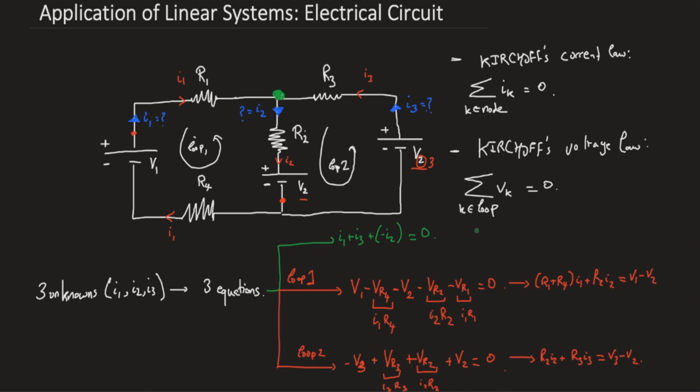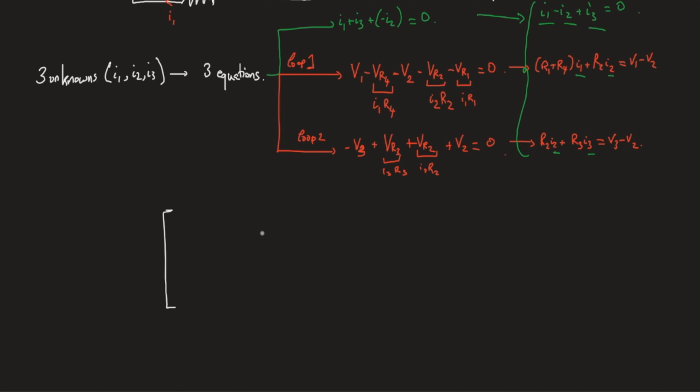Rewriting this, we get (R1 plus R4) multiplied by I1 plus R2 I2 is equal to V1 minus V2. Over here, we can rewrite it as R2 I2 plus R3 I3 is V3 minus V2. Also we can rewrite the first equation as I1 minus I2 plus I3 is equal to 0. We have three equations and three unknowns: I1, I2, I3. So we can write this as a system of linear equations. We've got a 3 by 3 coefficient matrix multiplied by the vector of unknowns I1, I2, and I3 equal to 0, V1 minus V2, and V3 minus V2. Let's fill in the matrix of coefficients. We get 1, minus 1, 1; R1 plus R4, R2, and 0; 0, R2, and R3.